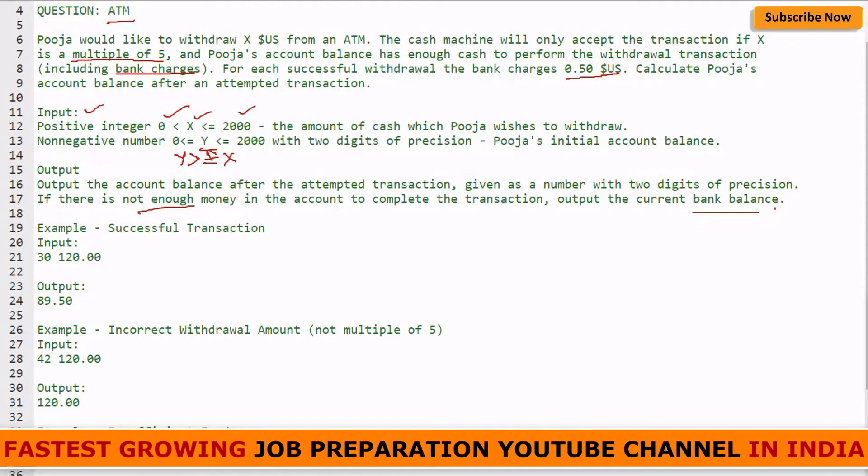Let's see the examples. This is one successful transaction example - input is 30 rupees, the withdrawal amount X. 120 is the initial amount balance. After transaction: 120 minus 30 gives us 90, and the bank will charge 50 cents for the transaction, so it will subtract 0.5 again, giving us 89.5. This is the amount remaining in the account.